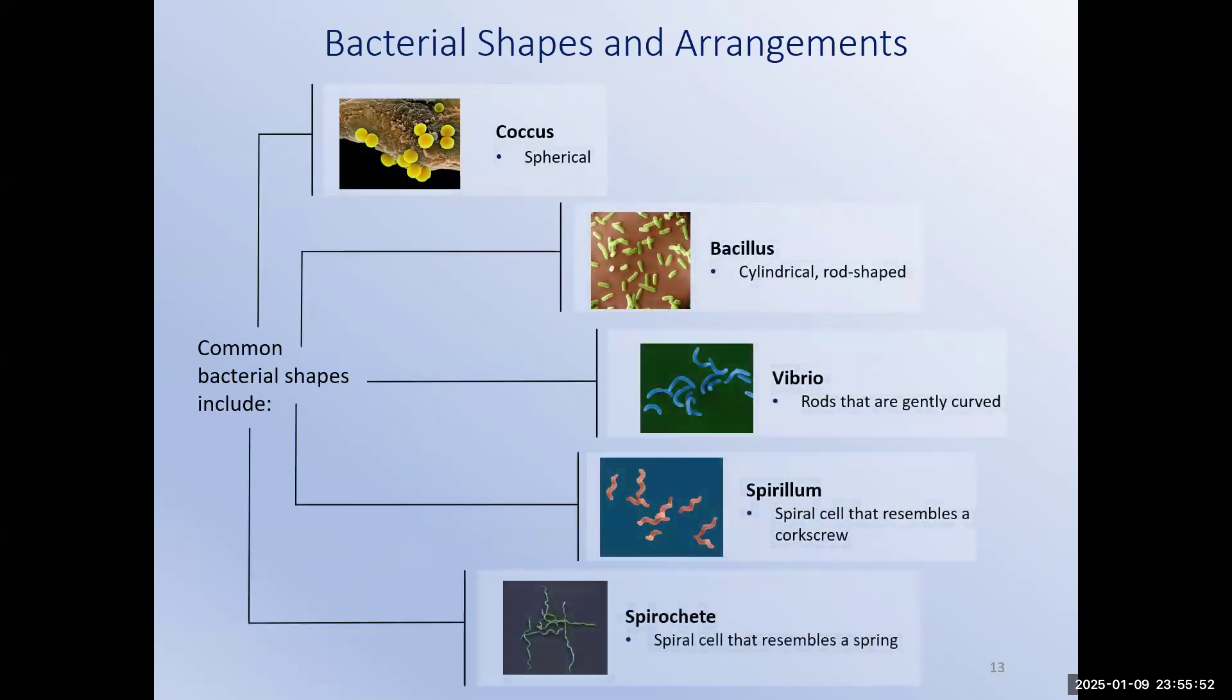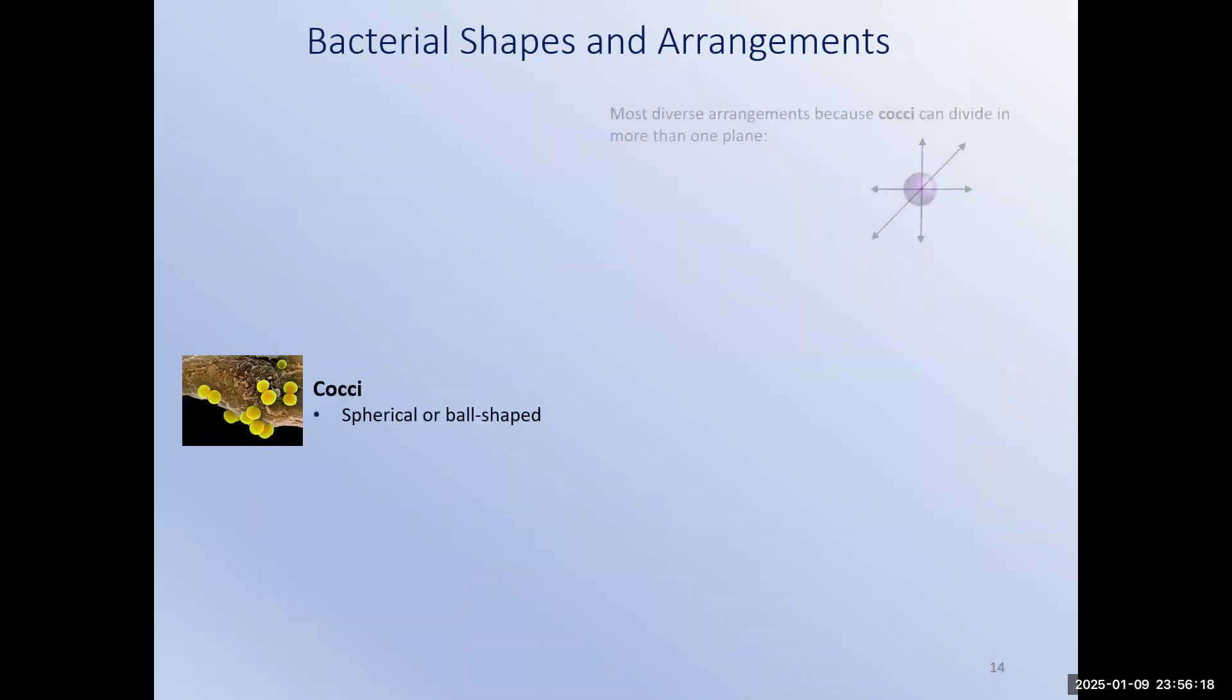In most cases, bacteria will have a constant shape and arrangement. Here you can see the five most common. A coccus bacterium is spherical. A bacillus is a rod-shaped bacterium. Vibrio bacteria are rod-shaped, but they have a slight little curve to them, sometimes referred to as a gull-wing shape. Spirillum are spiral cells that resemble corkscrews. Spirochetes take the corkscrew shape to the extreme. These bacteria are tightly twisted like a spring. Those are the five basic shapes of bacteria.